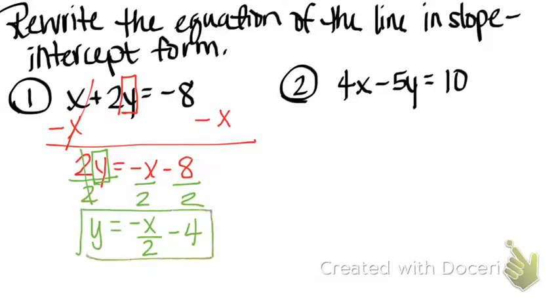You could have written your equation like this. Or, your other option is y equals negative one-half x minus four. Either of these mean the same thing. So, either of these options are correct. So, I want you guys to try number two all by yourself. And, we'll check and see if our answers match.